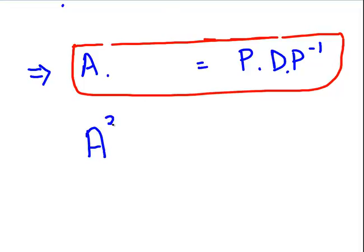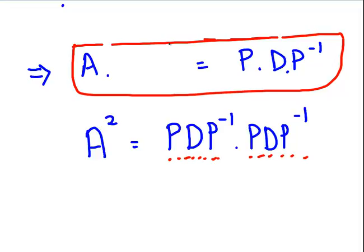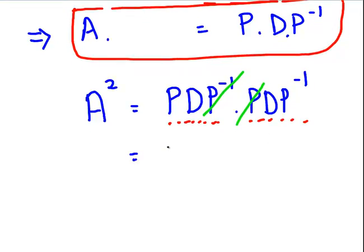A squared, using the identity at the top of the screen, would be P times D times P-inverse, times P times D times P-inverse. When we multiply that through, P-inverse and P cancel out. So A squared can be written as P times D times D times P-inverse, which is P times D-squared times P-inverse.